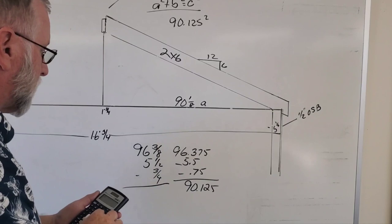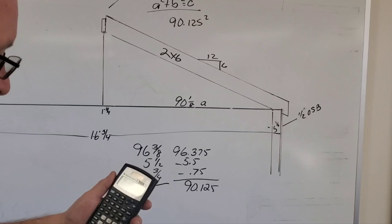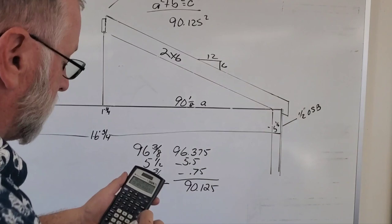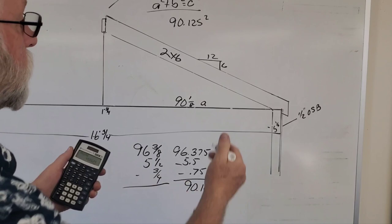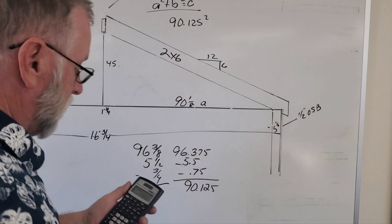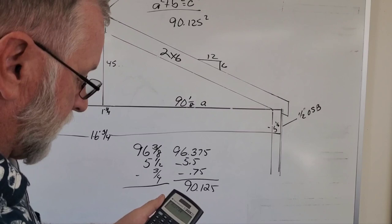So I'm going to take this number, 90.125, divided by 12 inches equals 7.5 decimal, times 6. That is the rise. So I end up with 45.0625.